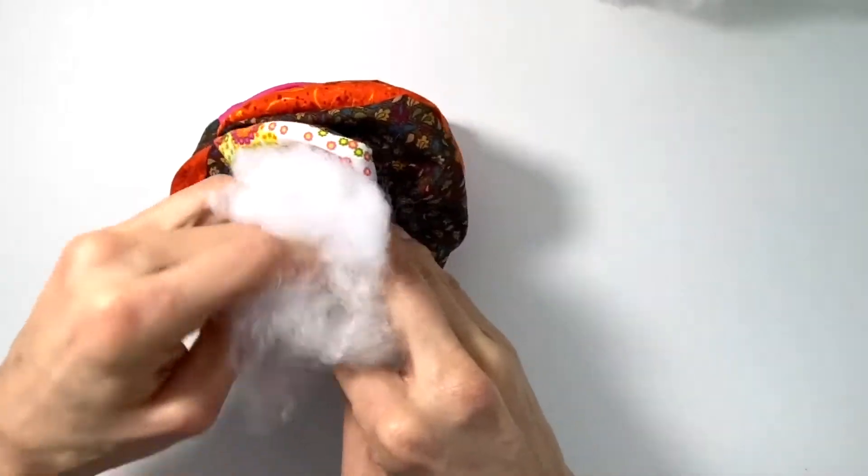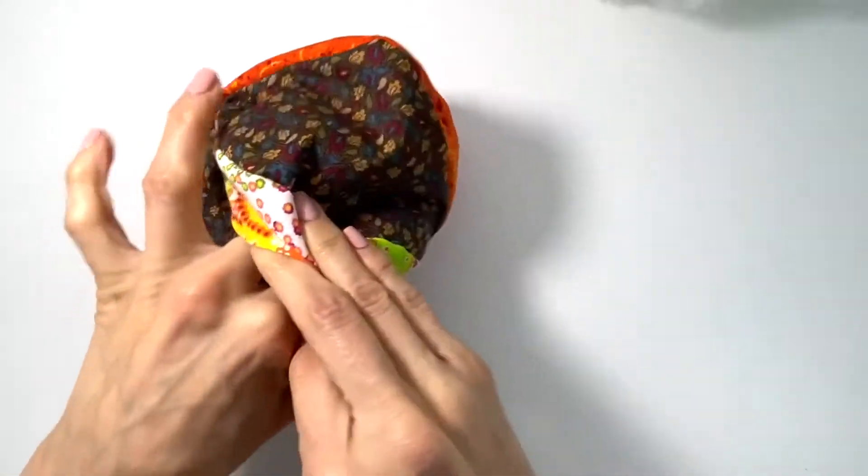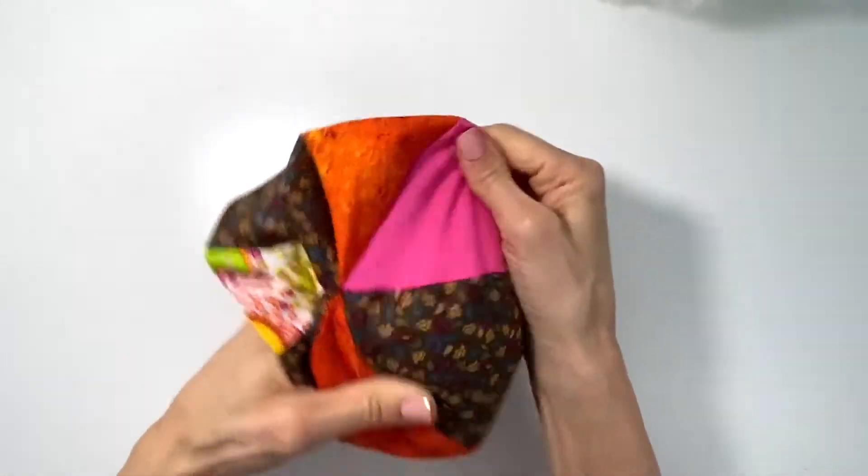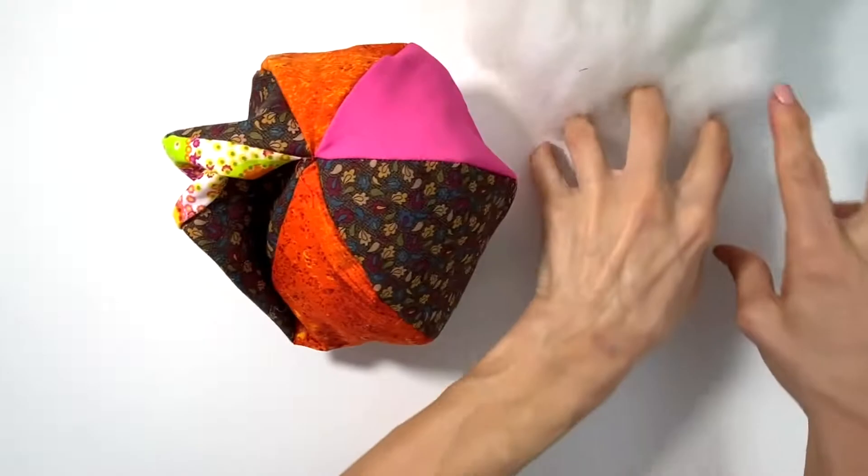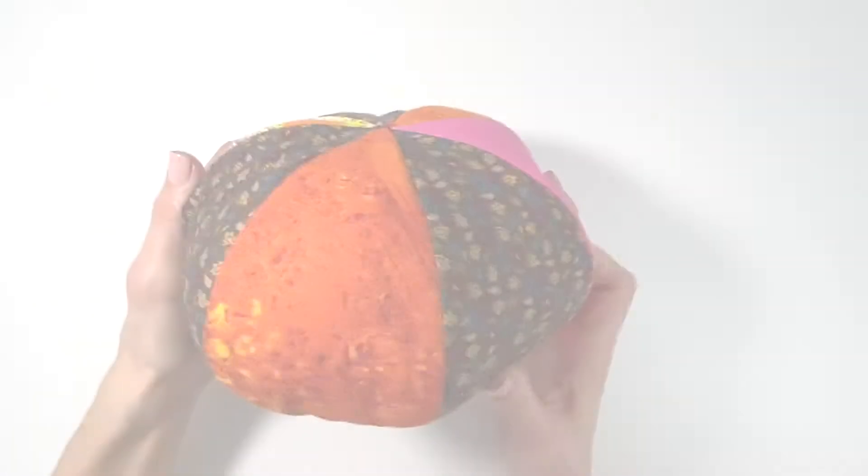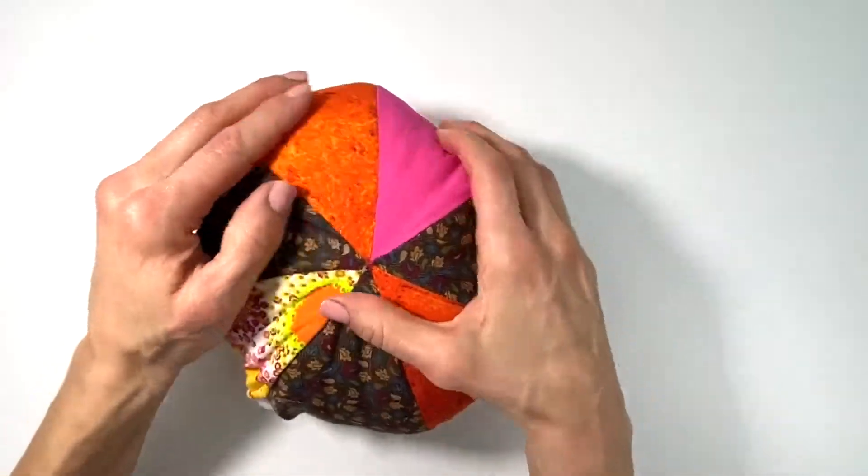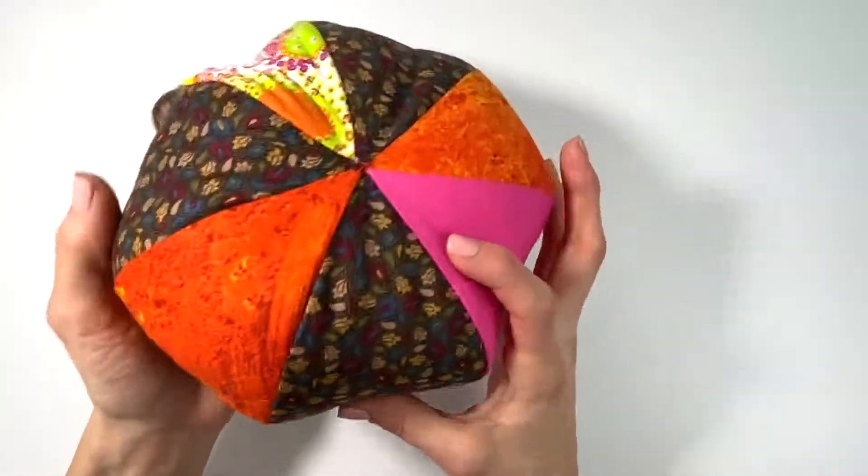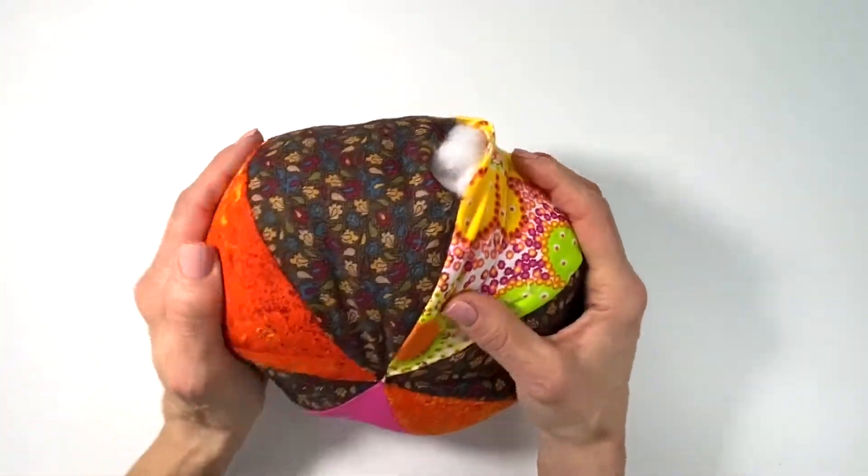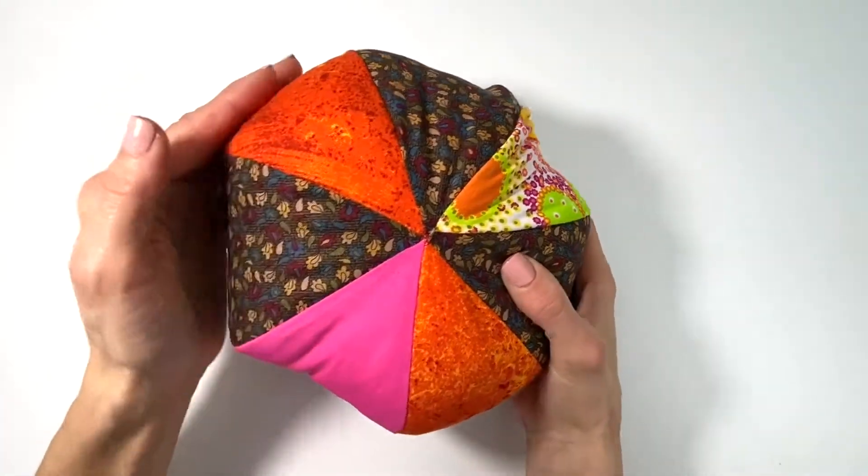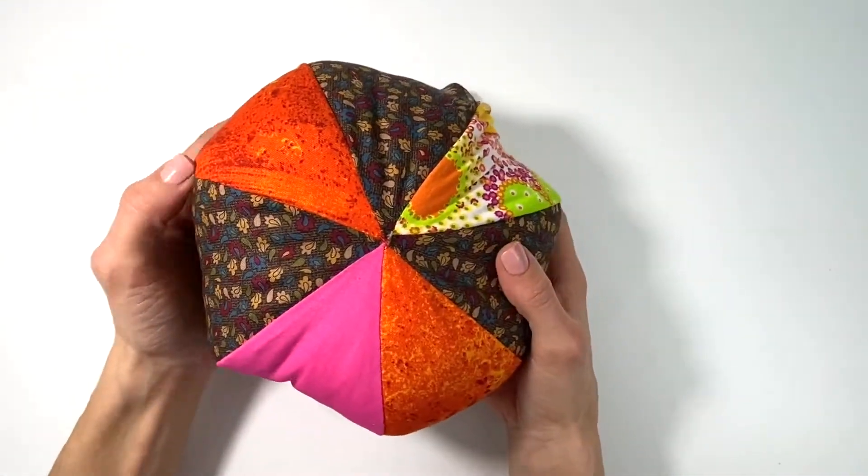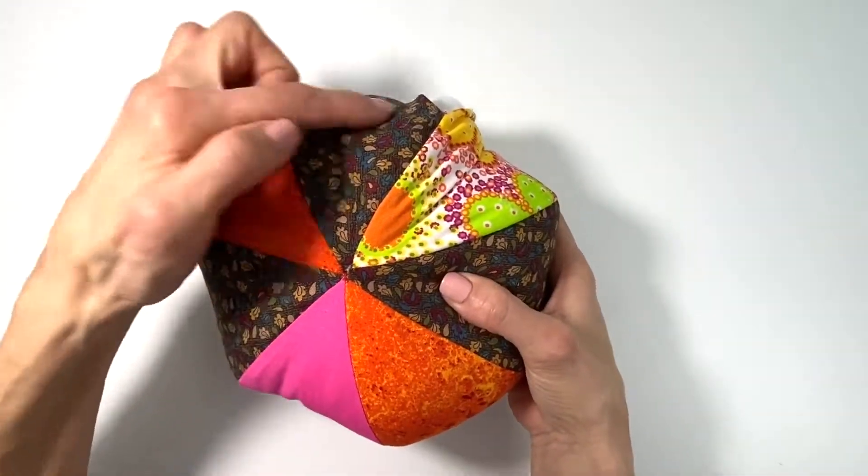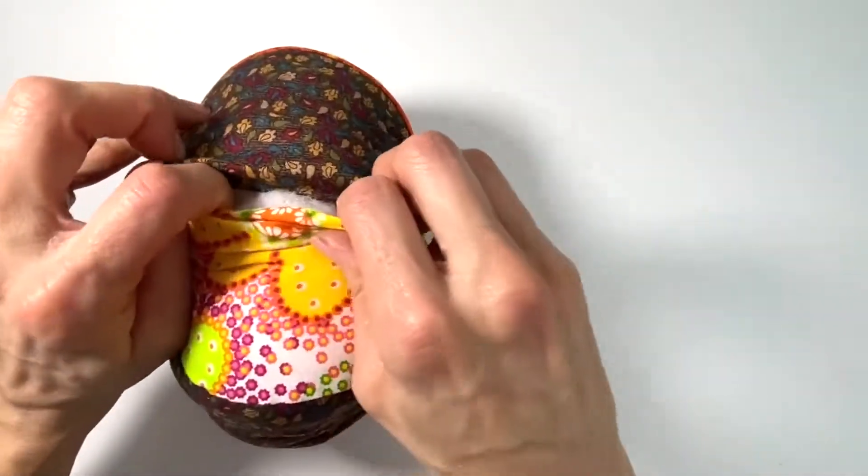I fluff up my stuffing before I stick it in, just to make sure it's a little extra fluffy. I have my ball stuffed, and you'll notice that it does resemble more of a pumpkin, but that's totally fine. If you wanted a rounder, more ball shape, you can do six pieces instead of seven.